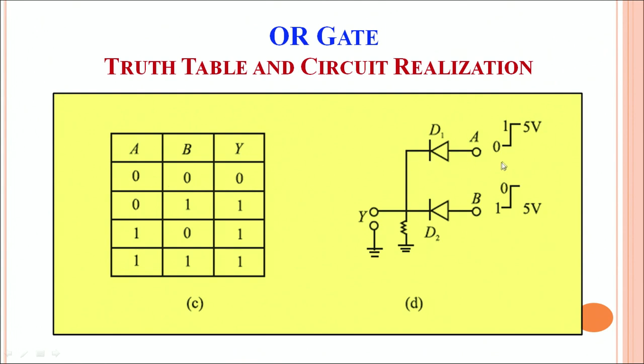In any other case, if any one of them goes to 1 or else both of them go to 1, either D1 or D2 or both D1 and D2 conduct and therefore the output at terminal Y equals 1. This is how an OR gate is realized using diodes.